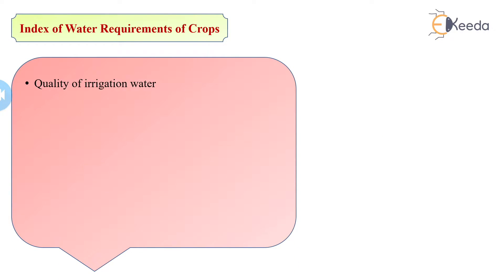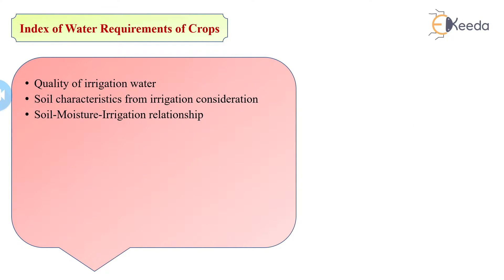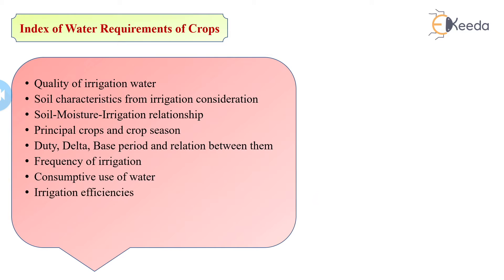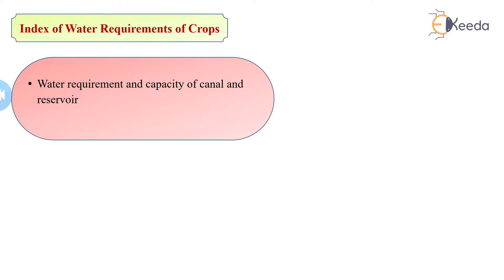First, let's discuss the index of water requirement of crop as designed by Mumbai University. The contents included are: quality of irrigation water, soil characteristics from the irrigation point of view, soil moisture-irrigation relationship, principal crops and crop seasons, duty, delta, base period and their relations, frequency of irrigation, consumptive use of water, irrigation efficiencies, and irrigation requirement of crop.